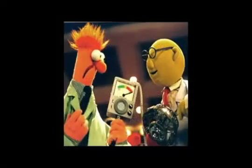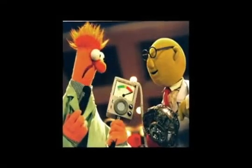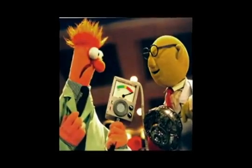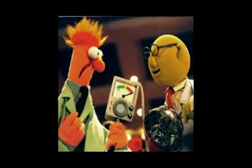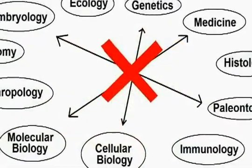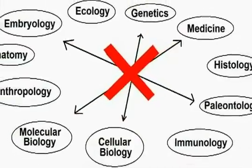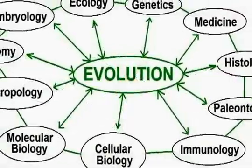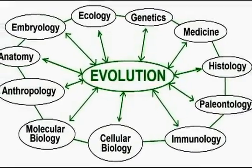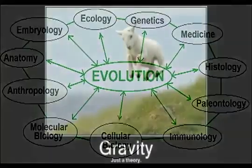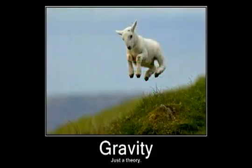Despite public opinion to the contrary, the scientific debate as to whether or not evolution happens ended nearly 100 years ago. Evolution is known as the unifying theory of biology simply because it unites the disciplines — meaning advancements gained in one field can be applied to others. It's also worth noting that the theory of evolution isn't about whether or not evolution occurs.